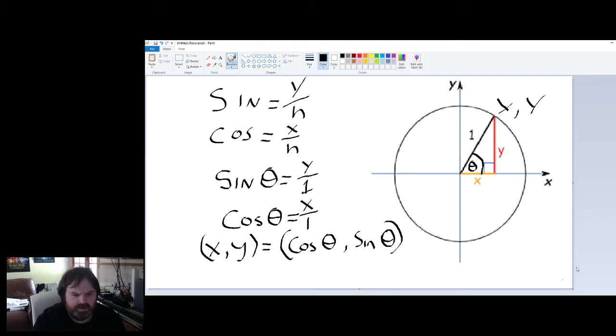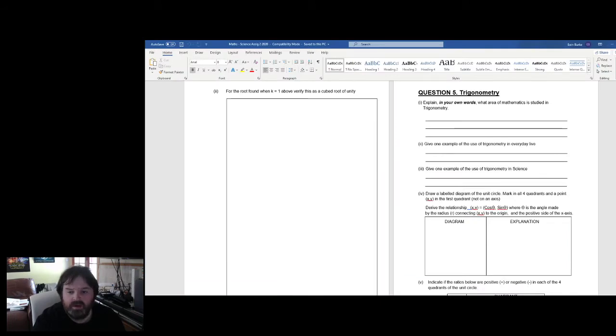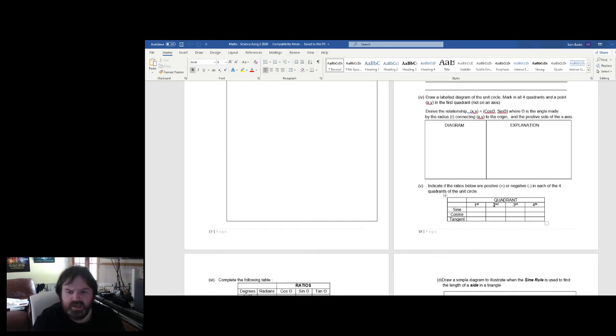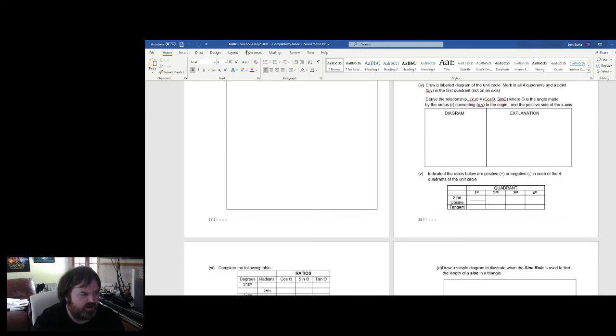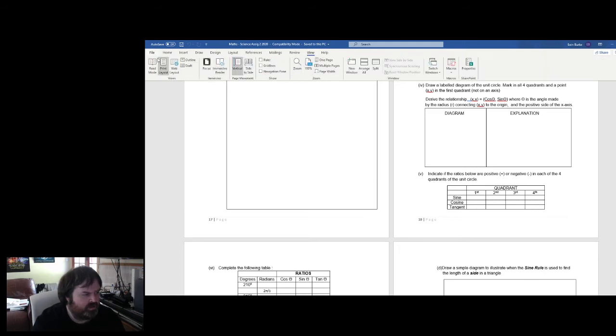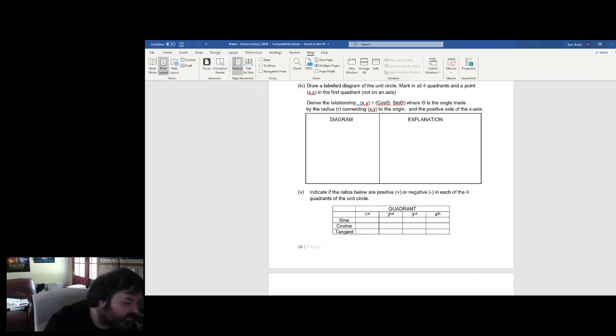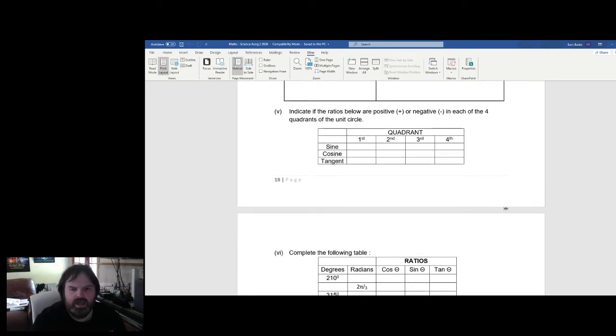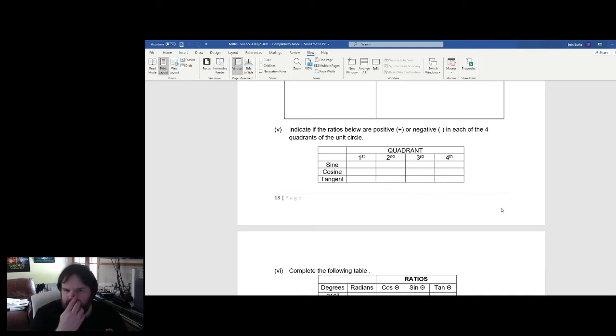Now, from that point onwards, you are going to be asked to make a couple of other deductions. The first one of these is to indicate if the ratios below are positive or negative in each of the four quadrants of the unit circle. Now, this is actually—there's a couple of different ways to figure this out. The first one is I want you to think about the unit circle for a second. So we know that you're going to be asked whether sine, cos, and tan are positive.